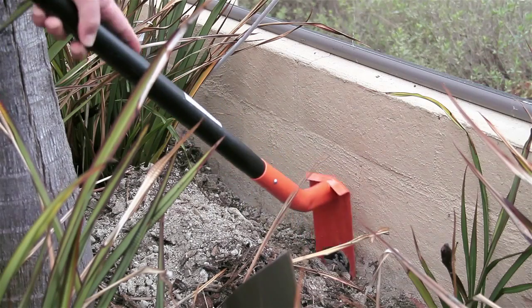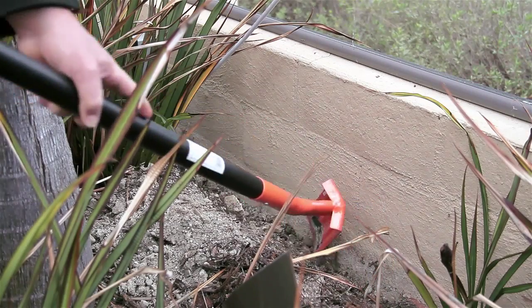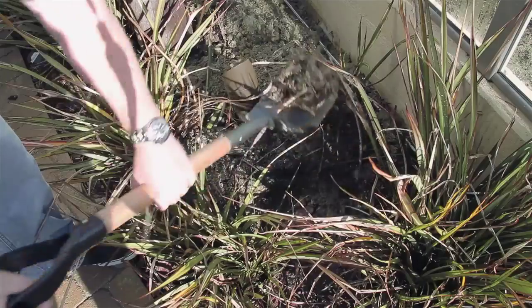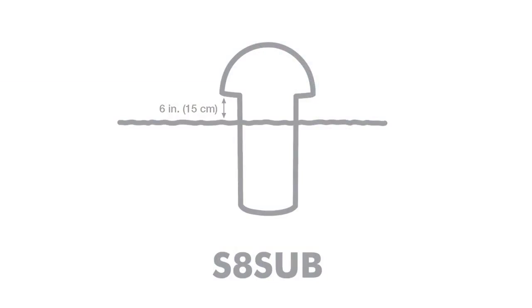First, dig a 4 to 5 inch, or 10 to 13 centimeter, trench along the perimeter for running the speaker wires. Next, dig a hole for the subwoofer, leaving approximately 6 inches, or 15 centimeters, between the bottom of the subwoofer canopy and the ground.